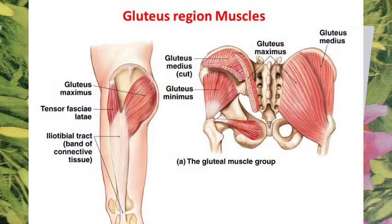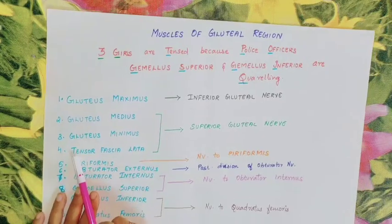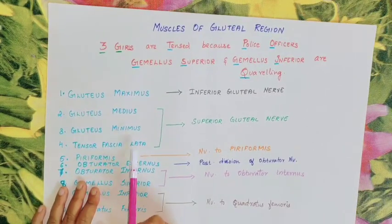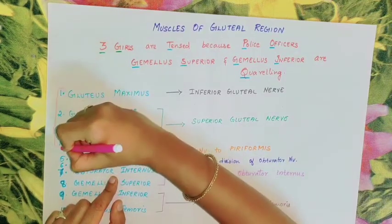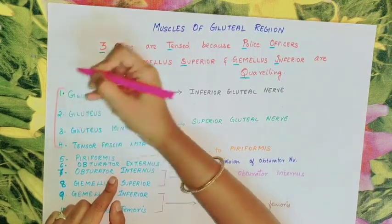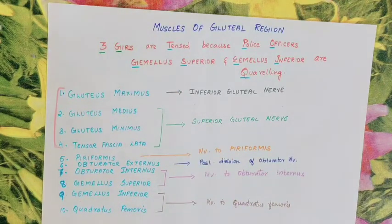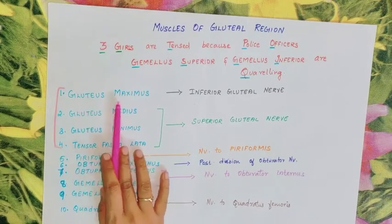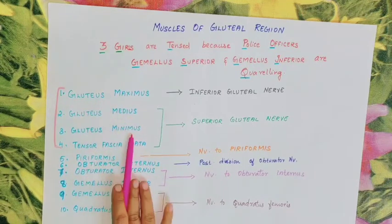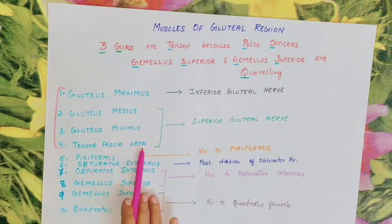The fourth muscle — tensed, representing T — is Tensor Fasciae Latae. It is present on the lateral side, also known as TFL. So, these first four muscles — Gluteus Maximus, Gluteus Medius, Gluteus Minimus, and Tensor Fasciae Latae — form the superficial group of muscles.